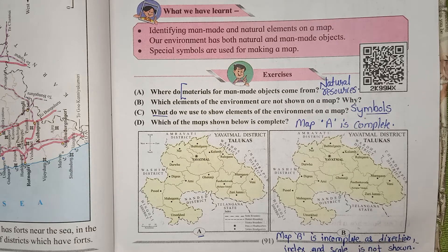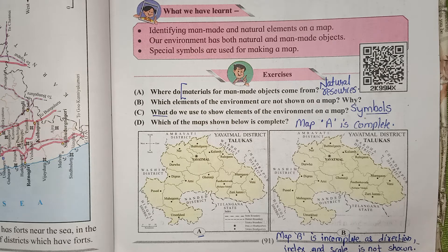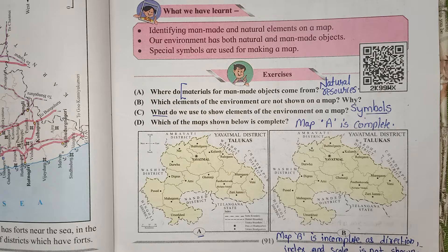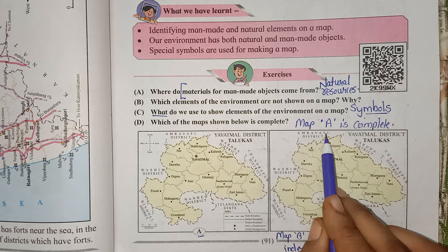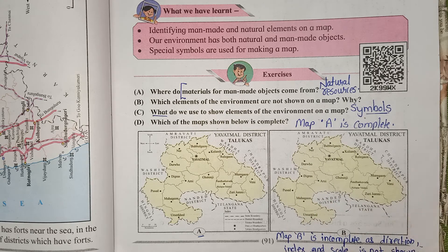So here are 3 things that are not shown in Map B: first, direction; then index; and then scale. So the correct answer is Map A is complete.